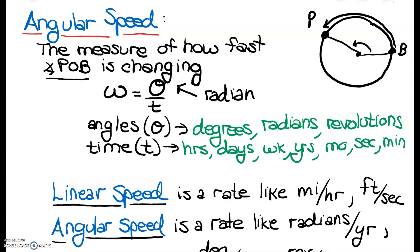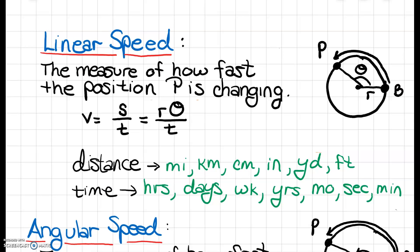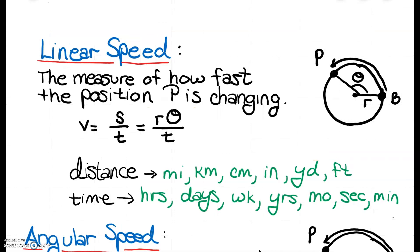Now let's go back to linear speed, because we now have a definition for theta over T. There is another formula for linear speed we can use: theta over T can be replaced with angular speed omega. So we have a new formula — linear speed V equals radius times angular speed. So we actually have three formulas for linear speed. Let's work two fairly simple problems to see how these formulas work.